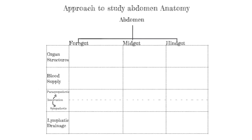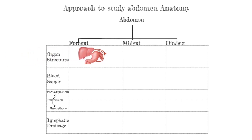Now that we've talked about the four key aspects of how you want to approach the abdomen, I'm going to discuss the foregut in more detail, starting off with the organ structures. Once you know the organ structures of the foregut, you have to be aware, like we mentioned earlier, they need a blood supply. That blood supply will be the celiac trunk.